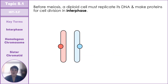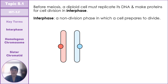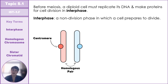Before entering meiosis, cells go through interphase — the non-dividing phase where cells grow, duplicate all their organelles, and replicate their DNA. During interphase, our two homologous chromosomes each contain a centromere at their center, and this is how we count chromosomes. We have one and two chromosomes making up this homologous pair.